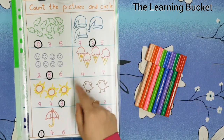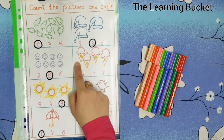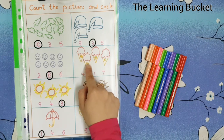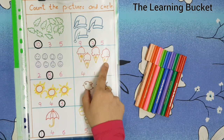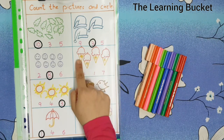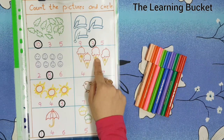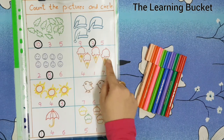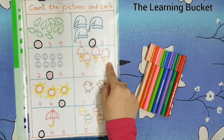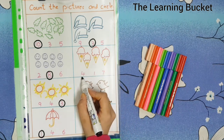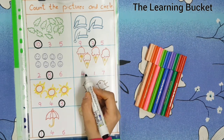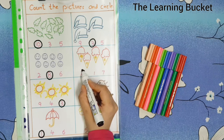Now come to the next picture. Wow, what is this? This is yummy ice cream! And how many ice creams are here? One, two, three, four. Four ice creams are here. Is this number four? Yes! This is number four.